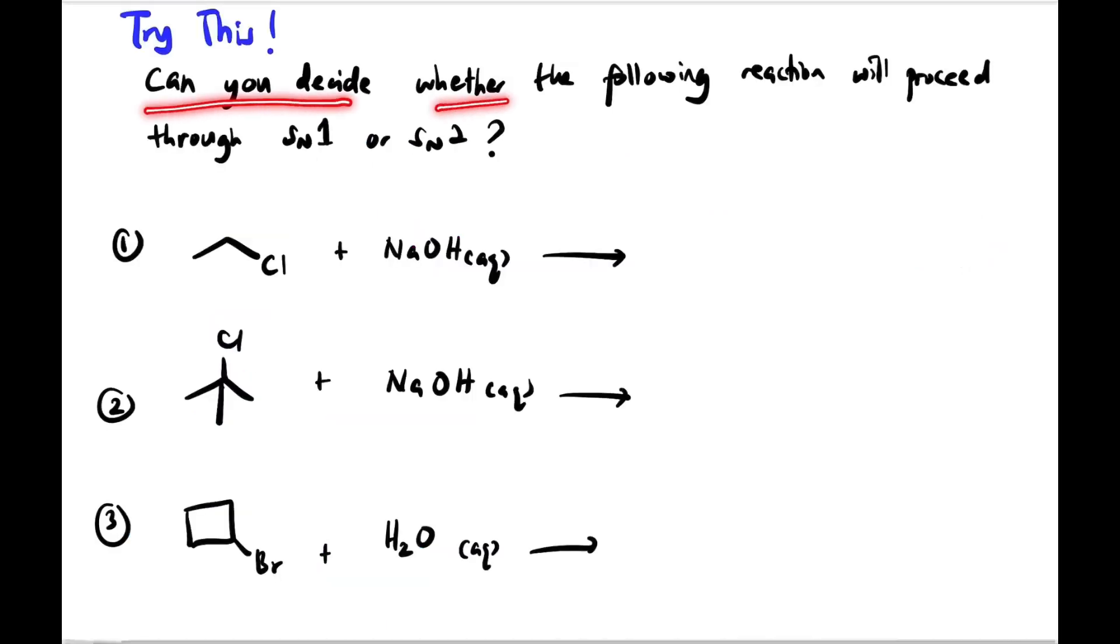Now, can you decide whether the following reaction will proceed through SN1 or SN2? First, we have primary haloalkane and NaOH, strong nucleophile. So the product is like this, Cl replaced with OH. First we just look at the haloalkane class factor first. This one is primary. Obviously it can favor SN2 mechanism.